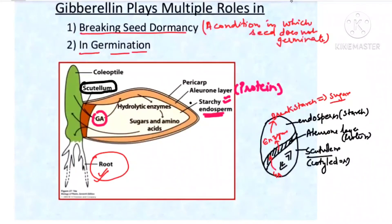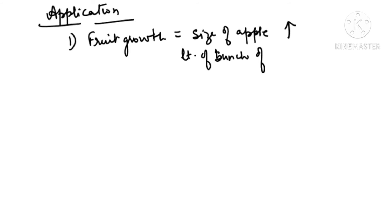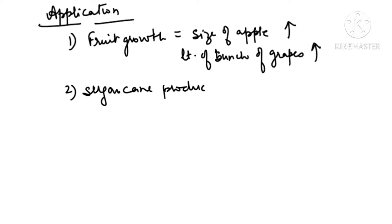Now let us see the applications. Since Gibberellic acid increases stem elongation, we use it to increase fruit growth. The size of an apple increases when you apply Gibberellic acid. The length of a grape bunch also increases. Sugarcane production is also increased by applying Gibberellic acid — nearly 20 tons per acre increase has been observed.